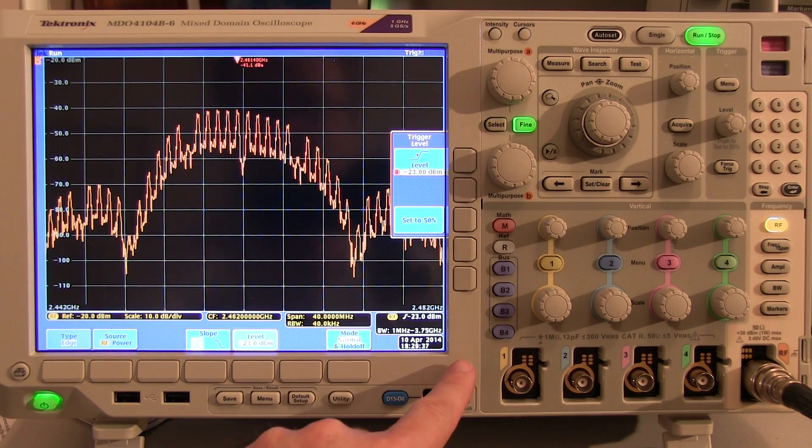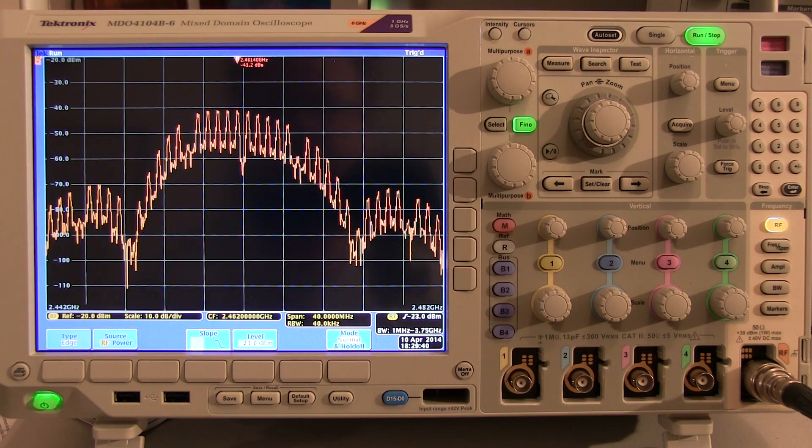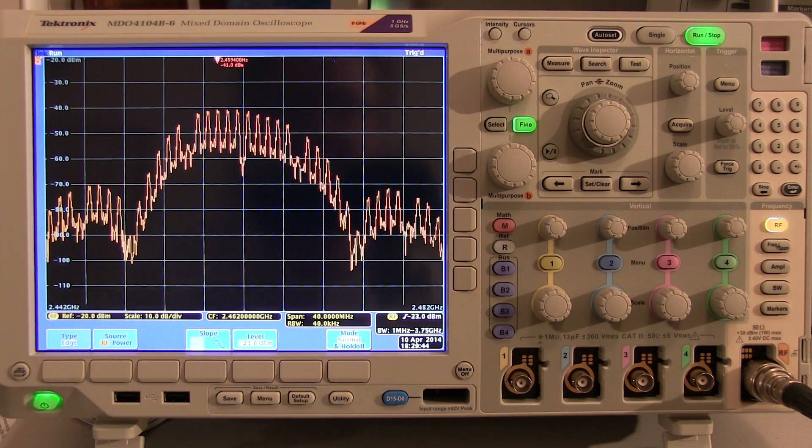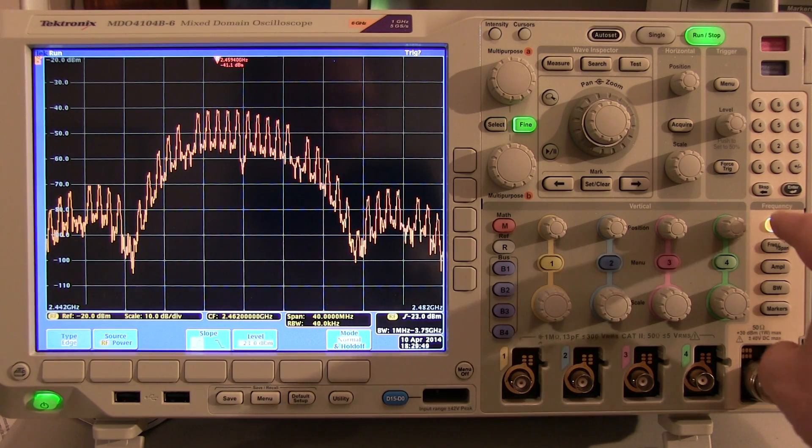The next thing we need to do is ensure that we're making the spectrum measurement at the right location in time, that we're not straddling the rising or falling edge of the burst. In order to do that, we need to look at the RF energy in the time domain.